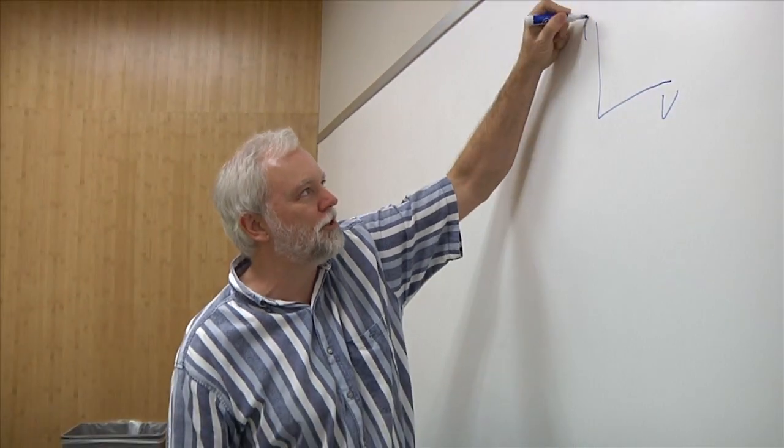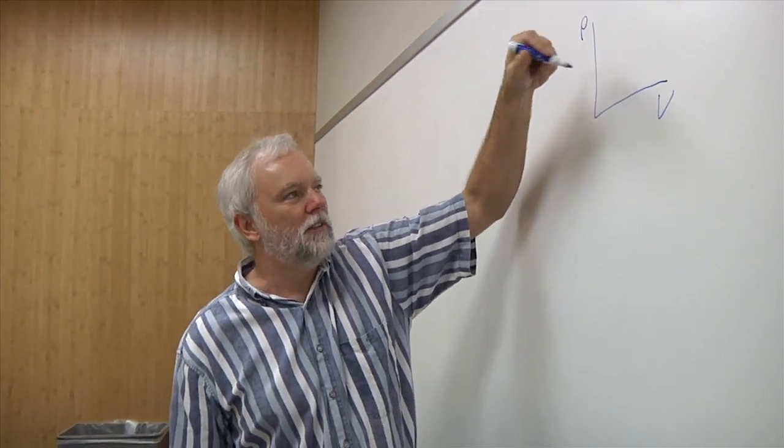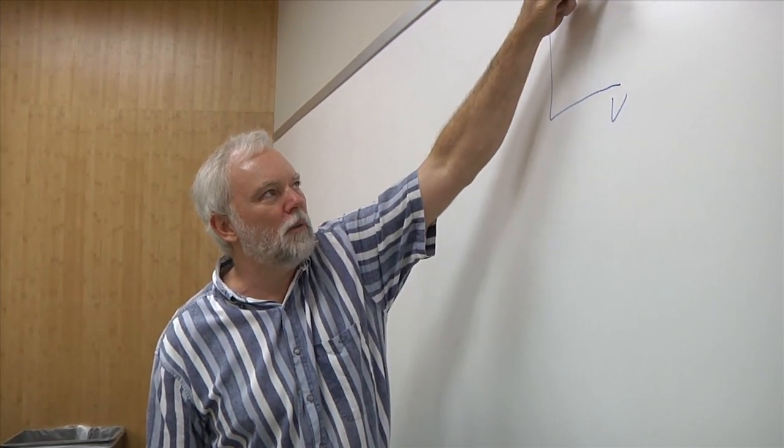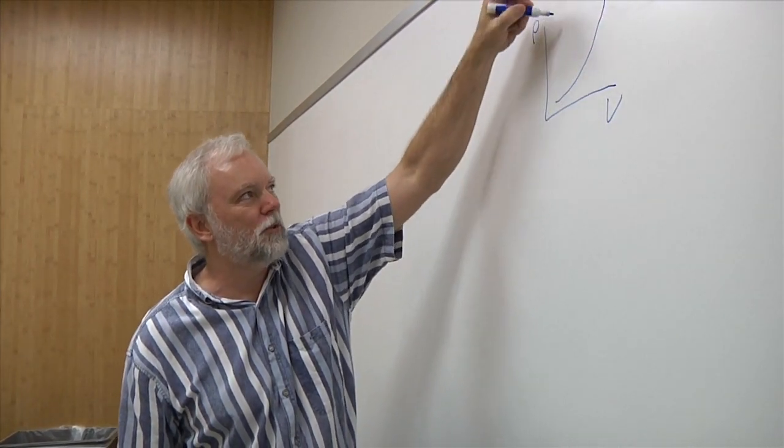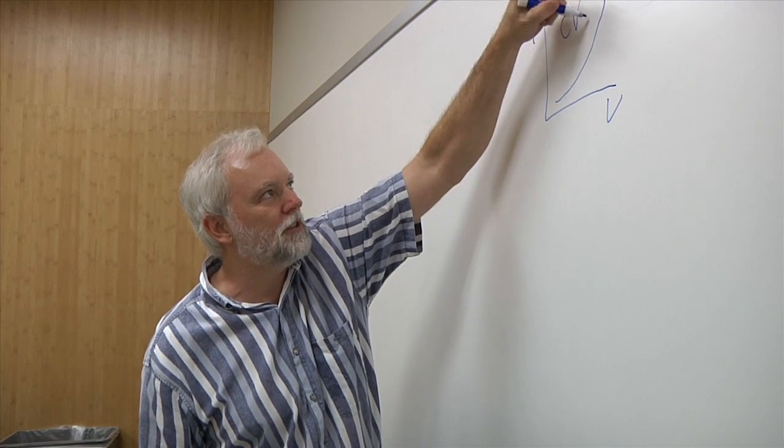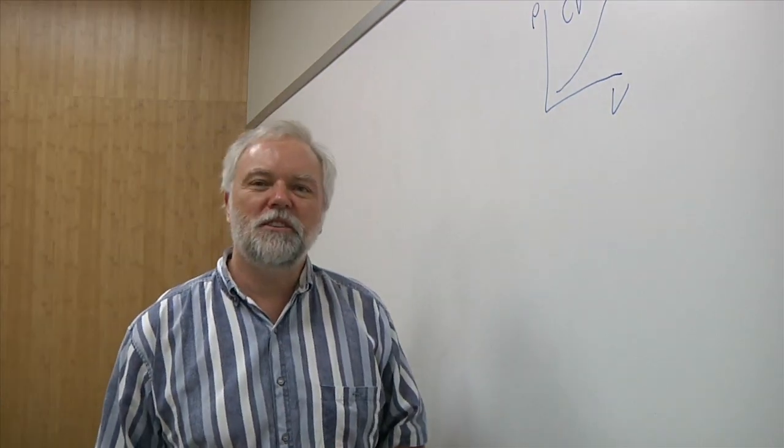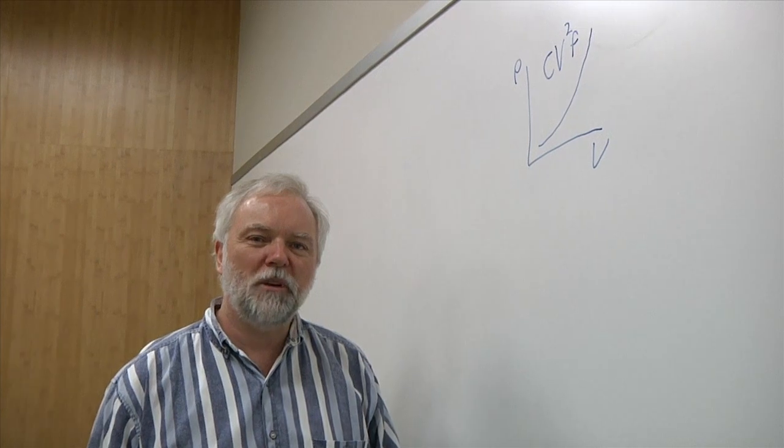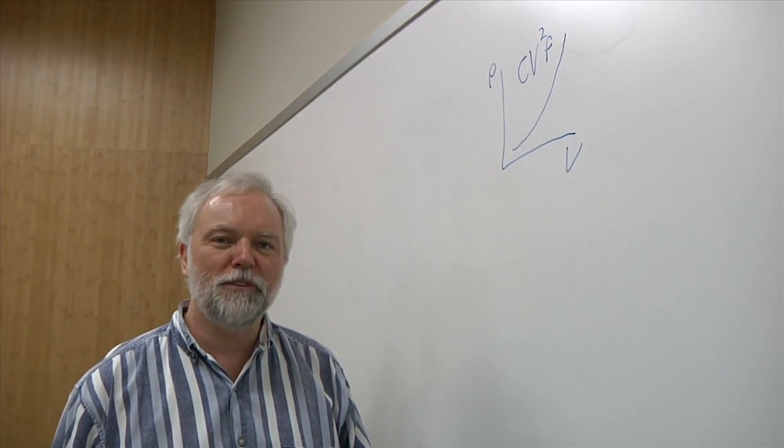So if we take a look at here a voltage versus power curve, dynamic power as you drop the voltage tends to go down as we tend to think of it as Cv²F. Power tends to work as Cv²F, where C is the capacitance, V is the voltage, and F is the frequency.